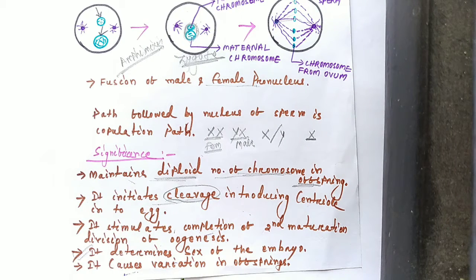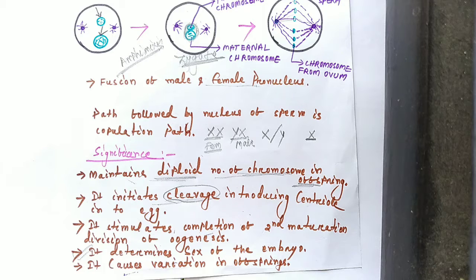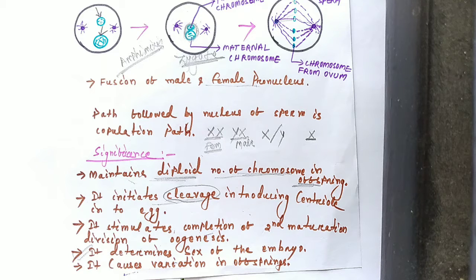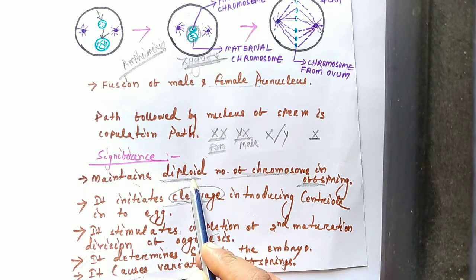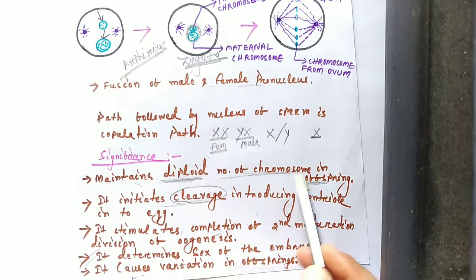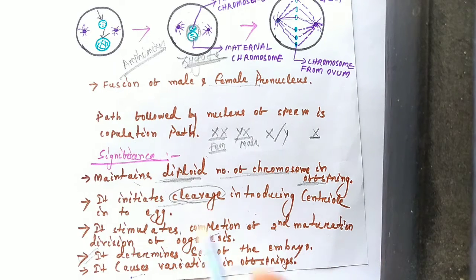Now we move to the significance or importance of fertilization. The first point is that due to fertilization, the diploid number of the cell is maintained. Cells are diploid in nature, but gametes are haploid. During fertilization, two haploid gametes — the male gamete (sperm) and female gamete (ovum) — fuse together to form a diploid structure, and thus the diploid number of chromosomes is maintained in the offspring.